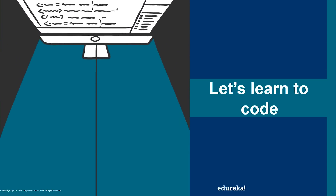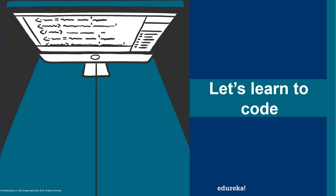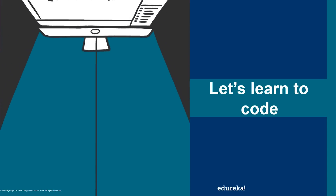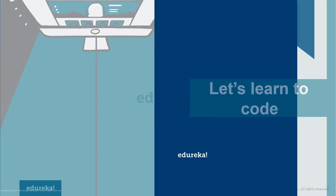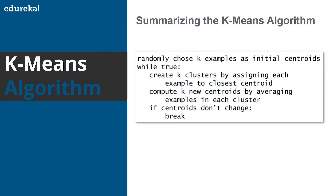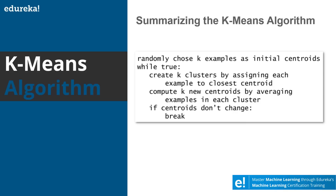Now let's move to the coding part. Let me first summarize the K-Means algorithm. Initially, we randomly choose K examples as initial centroids. Then, while true, we create K clusters by assigning each example to the closest centroid. Next we compute K new centroids by averaging the examples in each cluster. If the centroids don't change, that means we have found the exact clusters and we break. This was a summary of the K-Means algorithm.